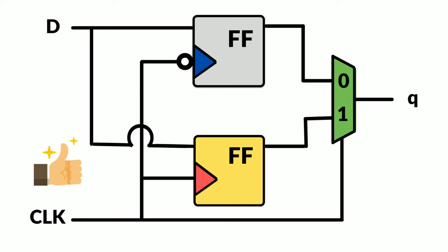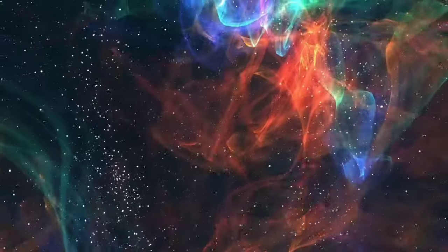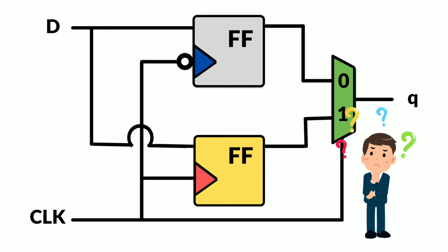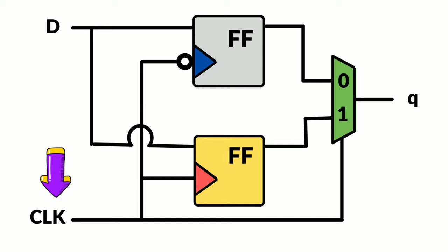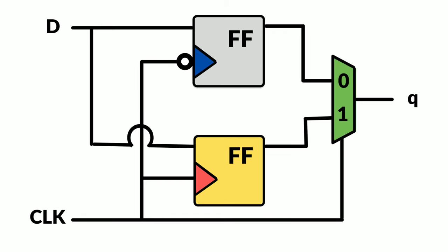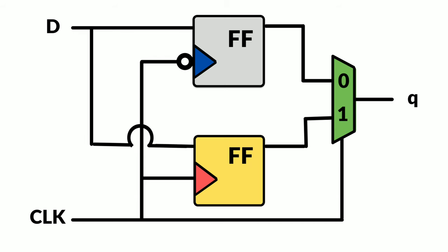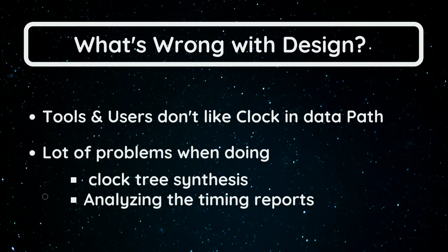On paper it's perfectly fine — this meets the functionality of dual edge trigger flip-flop. However, there is a problem in the circuit. The clock is going to the data path of the multiplexer, and we don't want the clock to be in the data path. Clock in the data path will cause a lot of problems while doing clock tree synthesis and while analyzing timing reports in synthesis. So this is the limitation of this circuit.